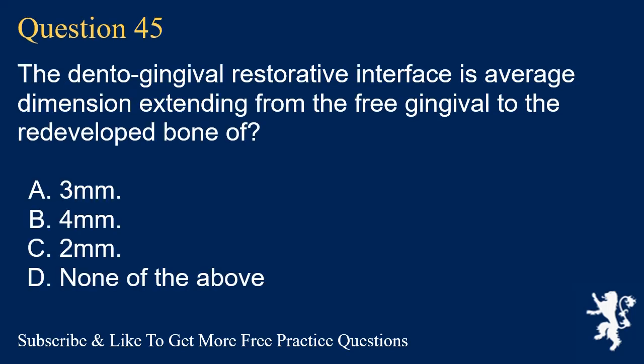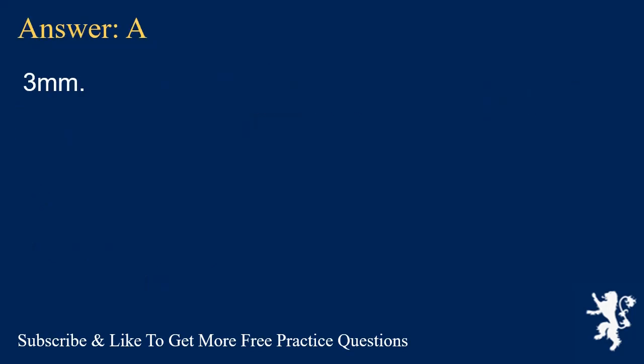Question 45. The dento-gingival restorative interface is an average dimension extending from the free gingival margin to the alveolar bone of? A. 3 mm. B. 4 mm. C. 2 mm. D. None of the above. Answer: A. 3 mm.